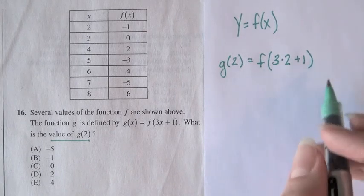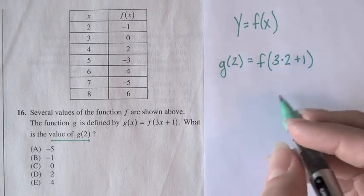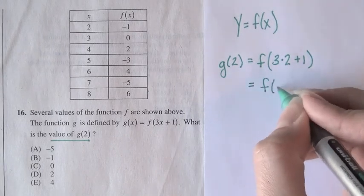Now let's simplify. We know what 3 times 2 plus 1 is. 6 plus 1 is 7. So you get g of 2 is equal to f of 7.